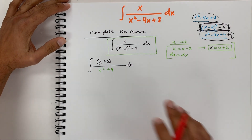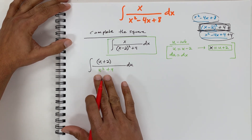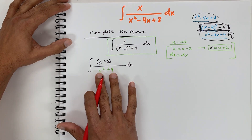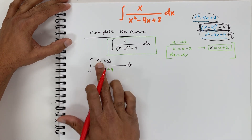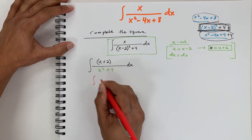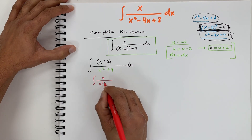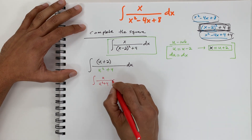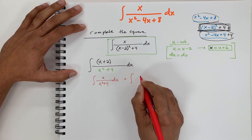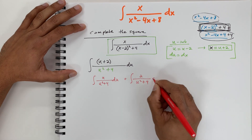Let's go ahead and split this integral, because we can't solve it as-is. We separate it into: the integral of u over (u squared plus 4) du, plus the integral of 2 over (u squared plus 4) du.